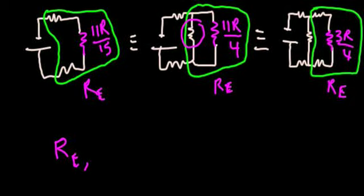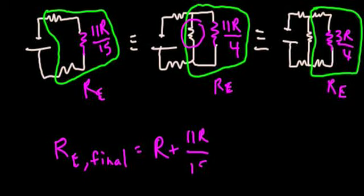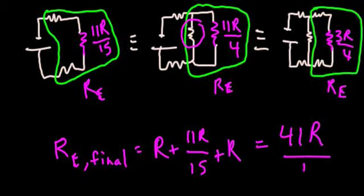So we get that the overall resistance of the entire circuit, the final equivalent resistance, is just going to be R plus 11R over 15 plus R. And adding those with the common denominator of 15, we get 41R over 15.